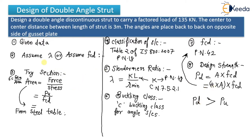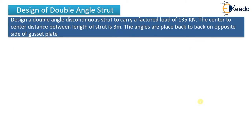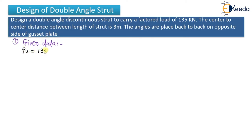Now I will solve the numerical step by step. The first step is given data. PU = 135 kN and L = 3 meters. The angles are placed back to back on the opposite side of the gusset plate. Diagram is not necessary right now because we have not yet tried the section. So only these two values are given.